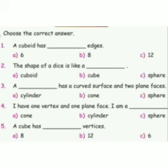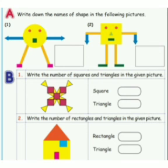Dear students, next, choose the correct answer. Find the answer. Okay, first question: cuboid has dash edges. Answer: 12. Very good. Next, second question: the shape of a dice is like a dash. Answer: cube. Third question: a dash has a curved surface and two flat faces. Answer: cylinder. Fourth question: I have one vertex and one flat face. I am a dash. Answer: cone. Fifth question: a cube has dash vertices. Answer: eight.